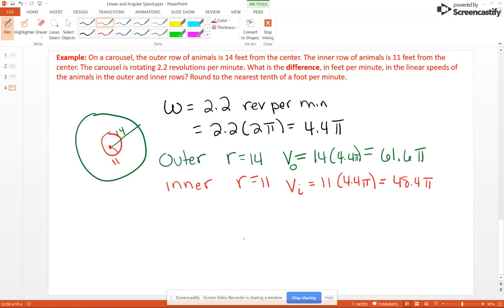Now, so there is the separate linear speeds, and we want to know the difference. So the difference, of course difference means subtraction, and we want a positive number here. So we're going to take the larger 61.6 pi minus the smaller 48.4 pi, and when you do that you get 13.2 pi. And now if you put that into your calculator around to the tenth of a foot per minute, you're going to get 41.5 feet per minute.